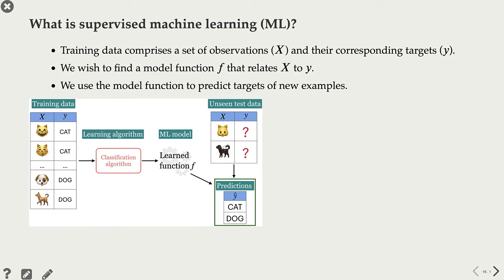What is supervised machine learning? In supervised machine learning, we are given a set of observations X and their corresponding targets Y. In our spam classification example, X would be a set of text messages or emails and Y is spam or not spam. In this toy example, X is a set of emoticons and Y are the corresponding labels for these emoticons.